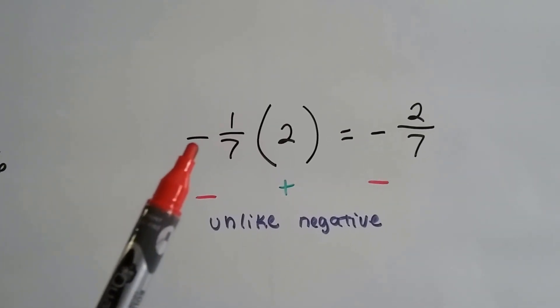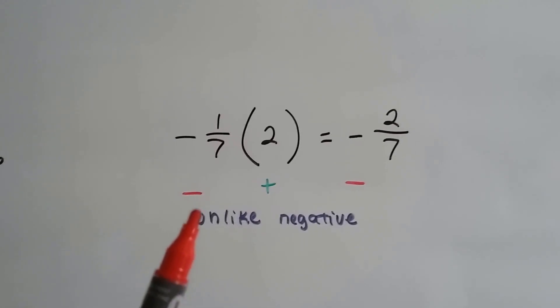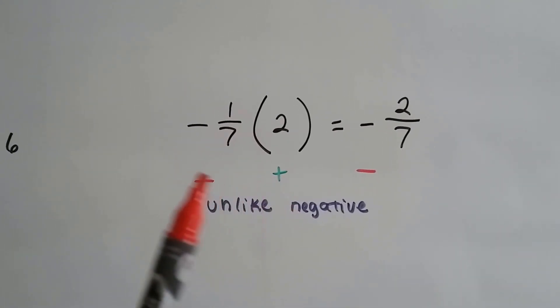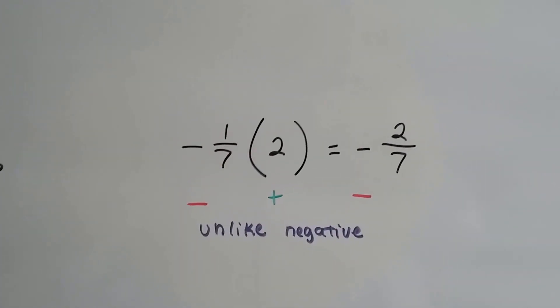Here we have unlike again, we have a negative 1/7 and a positive 2. We multiply their absolute values and we get 2/7. And because they're unlike signs, a negative and a positive, we have a negative for our product.